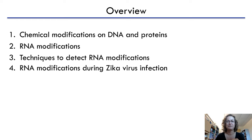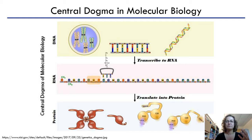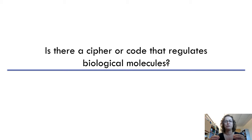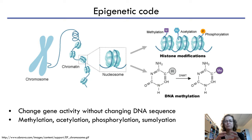If I take you to the central dogma, we know that our genetic material is encoded in DNA. From there, mRNA is transcribed and acts as a messenger to produce proteins. If I asked you whether there is a cipher or code that regulates biological molecules, you'd probably think of the epigenetic code — modifications on histones such as methyl, acetyl, phosphorylation, or sumoylation groups that either compact the DNA or loosen it to create a transcriptionally active region.